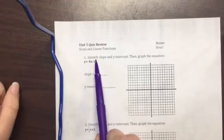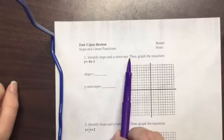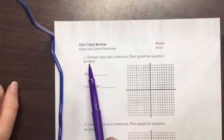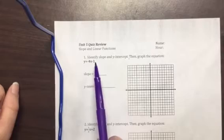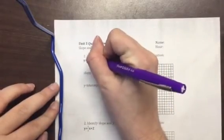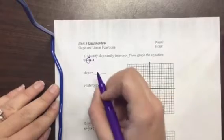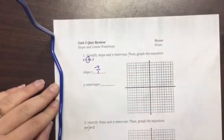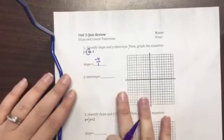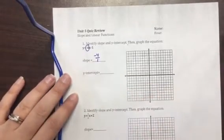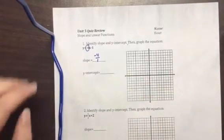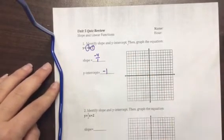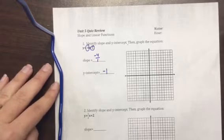Number one says identify slope and y-intercept, then graph the equation y equals negative 4x minus 1. I know that my slope is always my coefficient of x, so I'm going to label my slope as negative 4. Remember, we like to write it as a fraction so that when we go to graph it, we have both a rise and a run. My y-intercept is going to be at negative 1 because it says negative 4x minus 1.